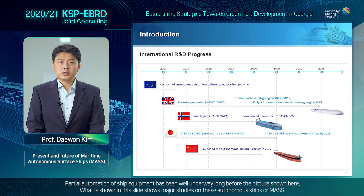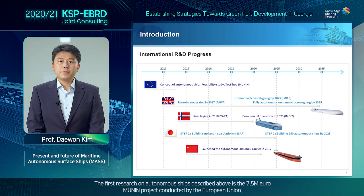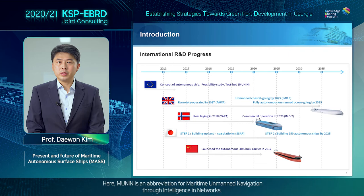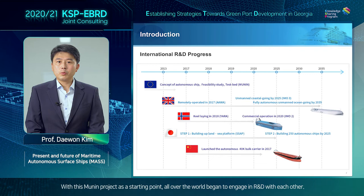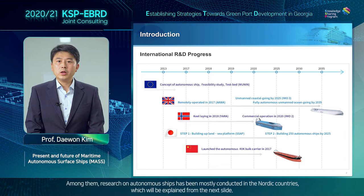What is shown in this slide are major studies on autonomous ships or MASS. The first research on autonomous ships described above is the 7.5 billion euro MUNIN project conducted by the European Union. MUNIN is an abbreviation for Maritime Unmanned Navigation through Intelligence in Networks. Although this study did not create a prototype, it did a study on the prevention of collision between virtual ships based on a network, and mentioned the importance of onshore control for these ships. With this MUNIN project as a starting point, all over the world began to engage in R&D. Among them, research on autonomous ships has been mostly conducted in the Nordic countries.